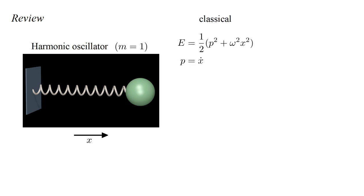In classical mechanics, the total energy is one-half quantity P squared plus omega squared X squared. P is the momentum, mass times velocity. Since the mass is one, P is just the velocity, X dot. Omega squared is the spring constant.